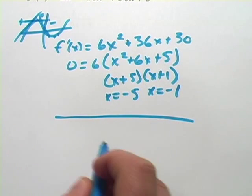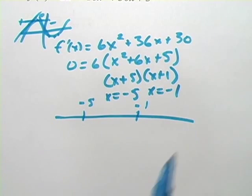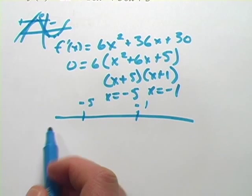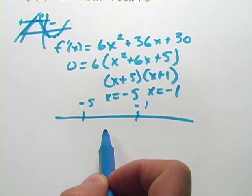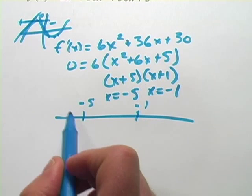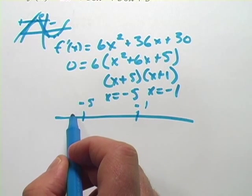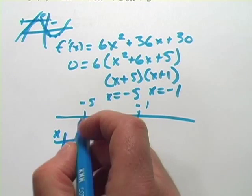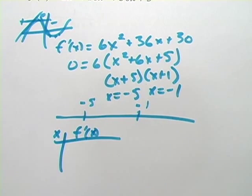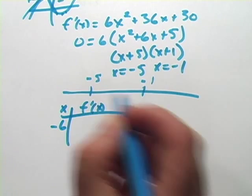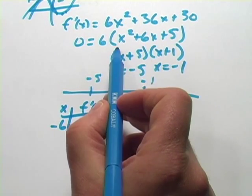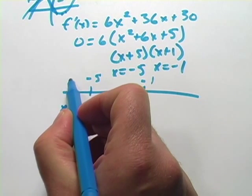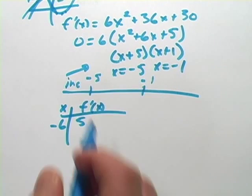Now I'm going to draw a little number line here. So we have negative 5, we have negative 1, and we have these three regions. In each of these regions, the function is either going to be increasing or decreasing, and at negative 5 or negative 1 we have a relative max or min. To test these regions, I'm simply going to select a point to plug in. I'm going to plug in some values for x and test the derivative, f'(x). If I plug in negative 6, I get 36 minus 36 plus 5, that's a positive 5. So the function is increasing here, which means this is probably a max.